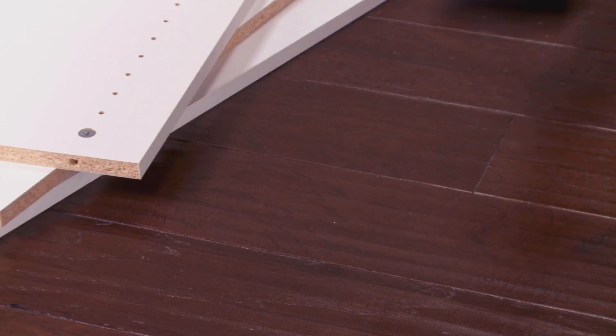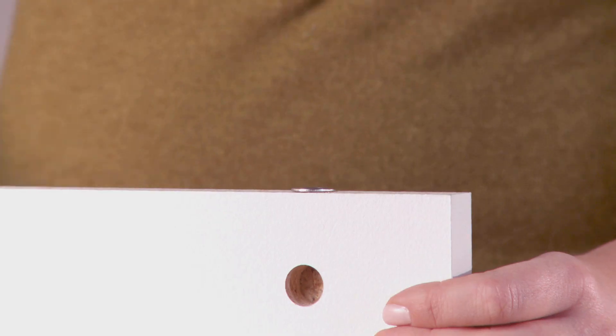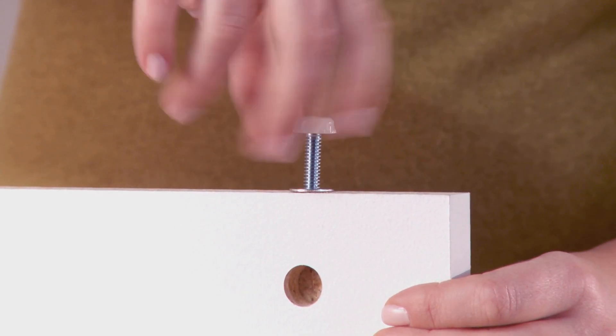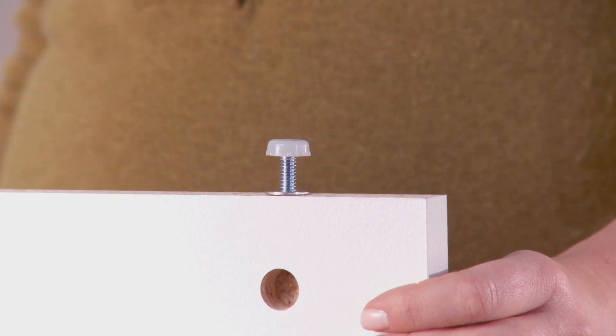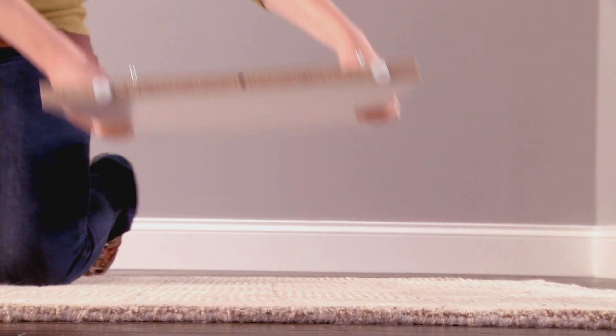Using a rubber mallet, gently tap the bottom nuts into the bottom of one set of your side panels. Then screw the leveling feet into the nuts. You may want to lay down a carpet to protect your floor from scratches during assembly.